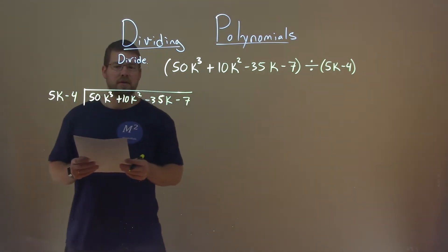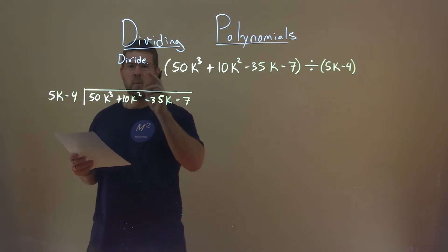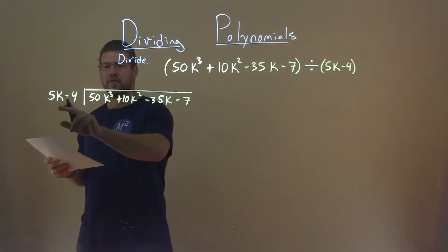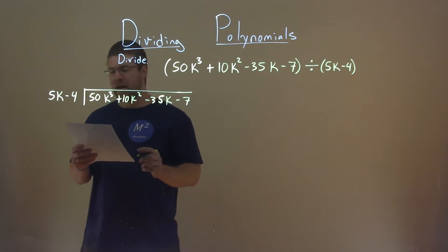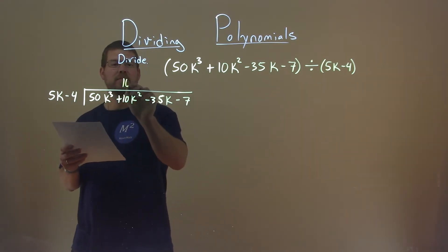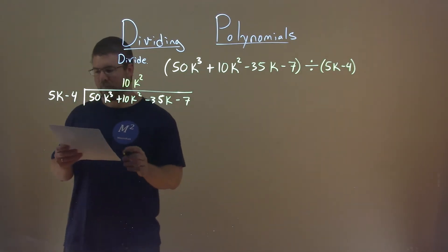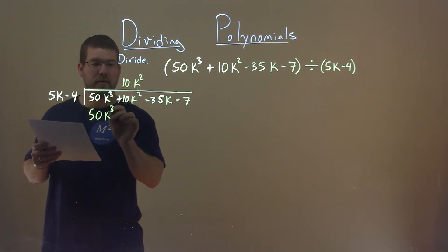So now we have to ask ourselves a few questions. What number times 5k gets me 50k to the third power? And that's going to be a 10k squared. 10k squared times 5k is that 50k to the third power.